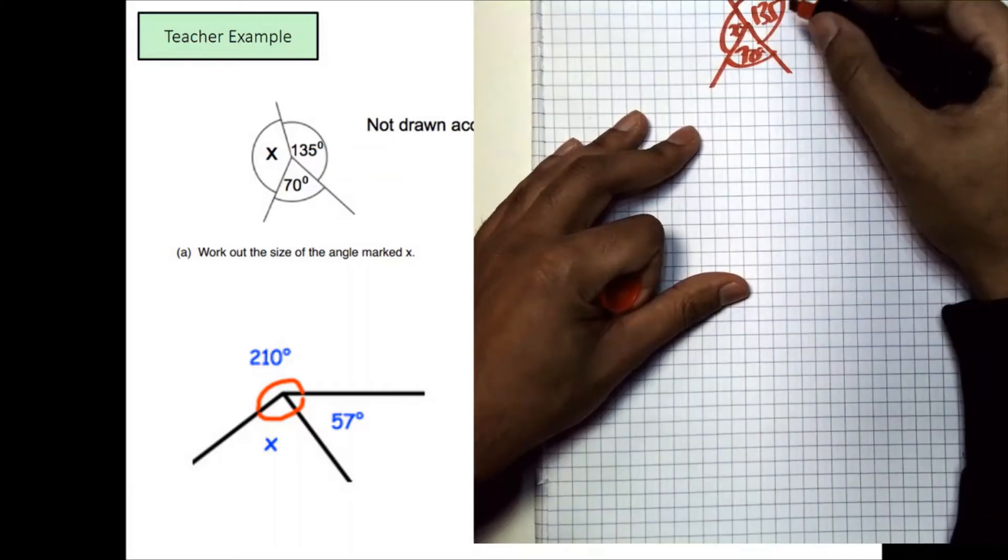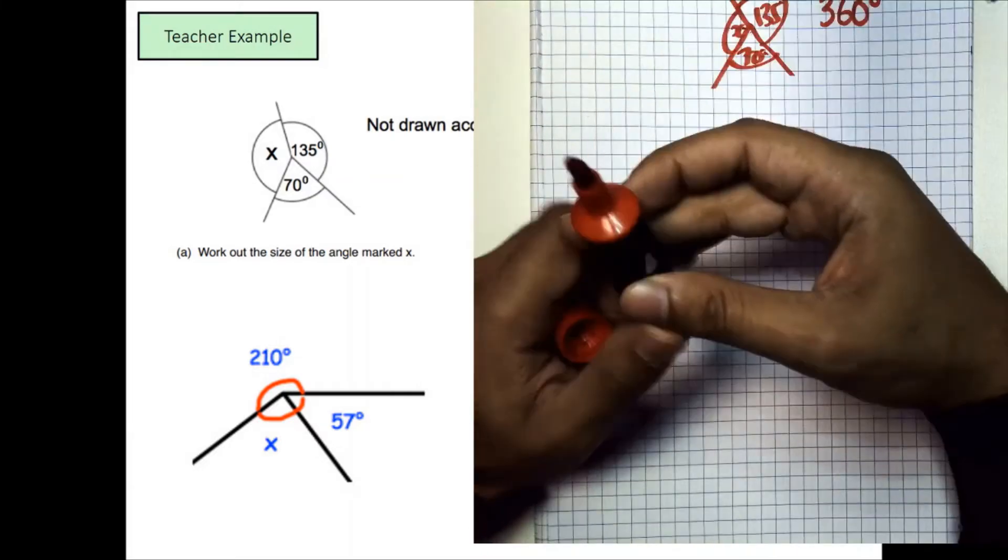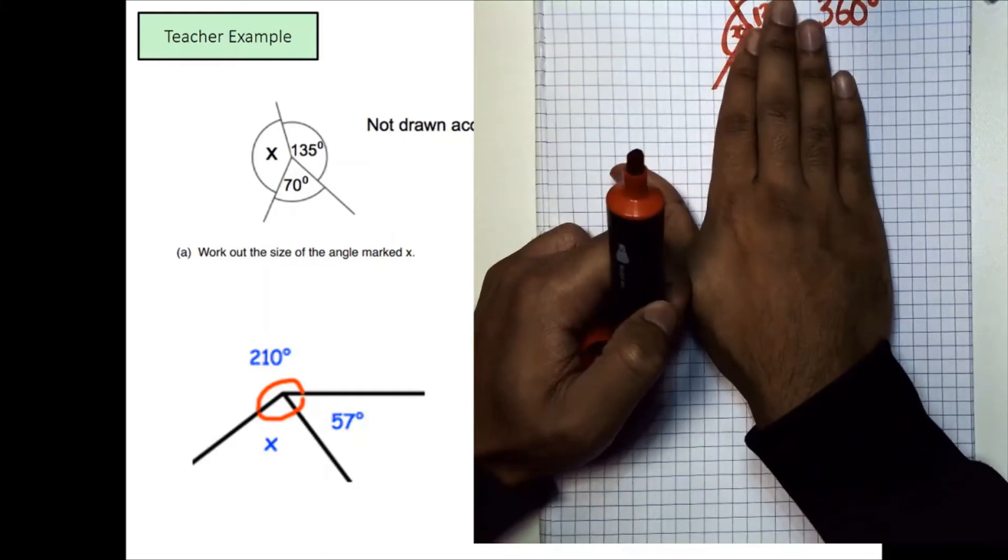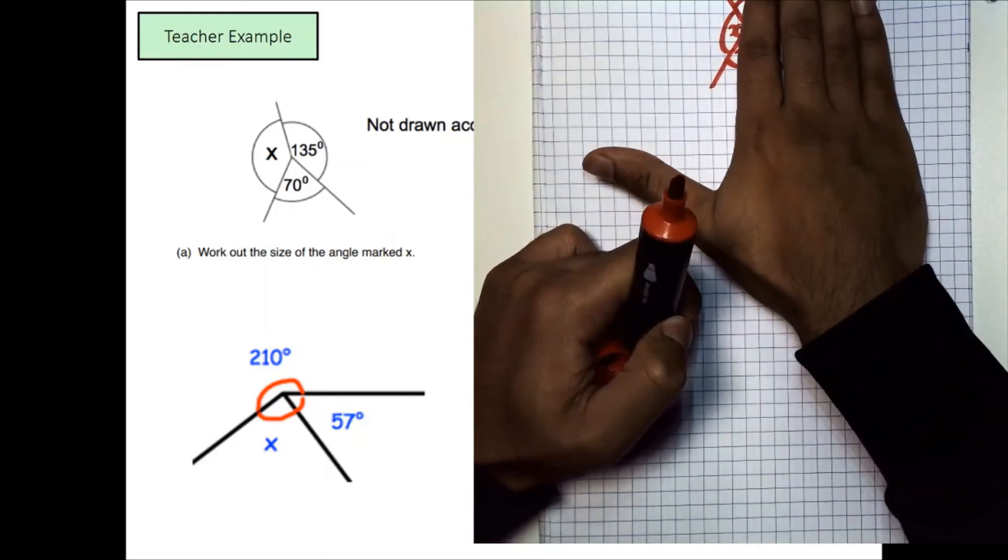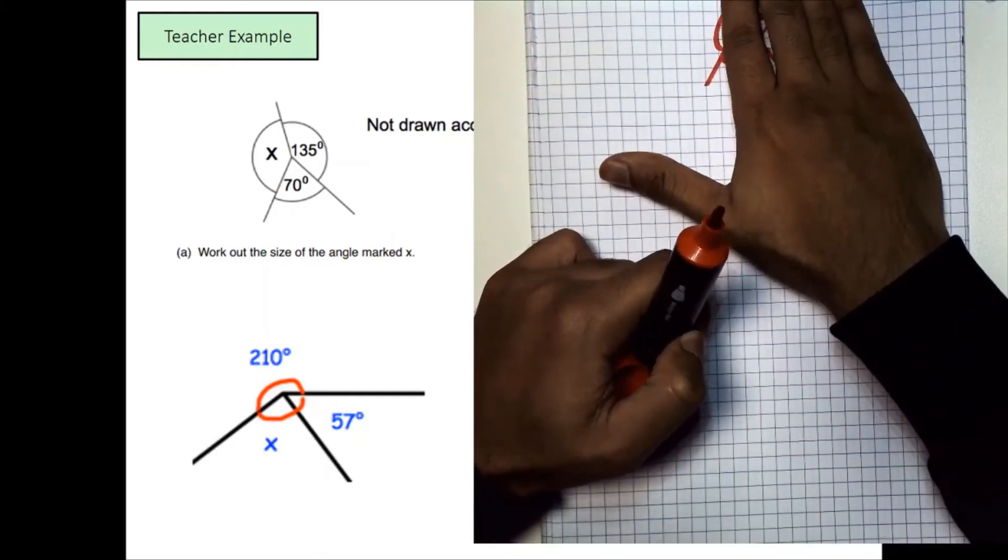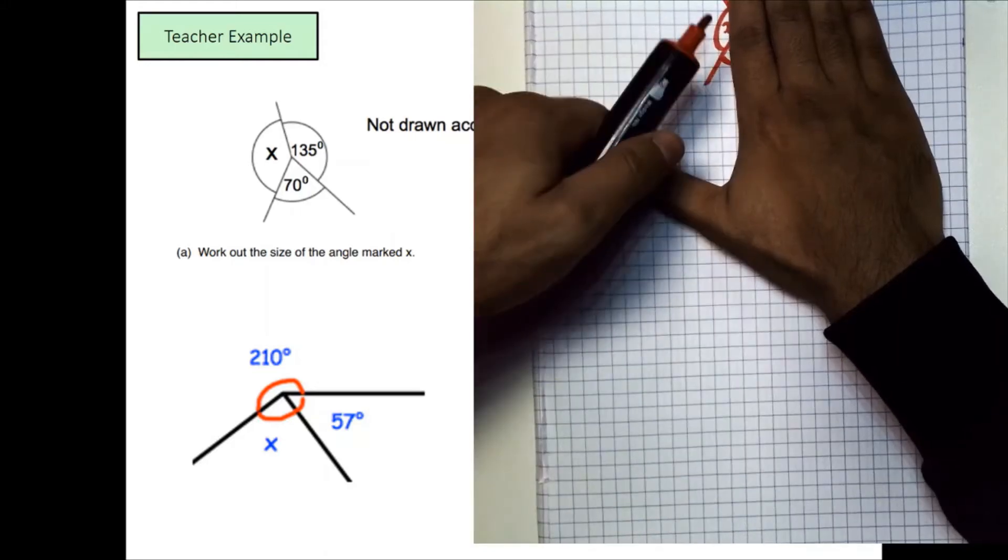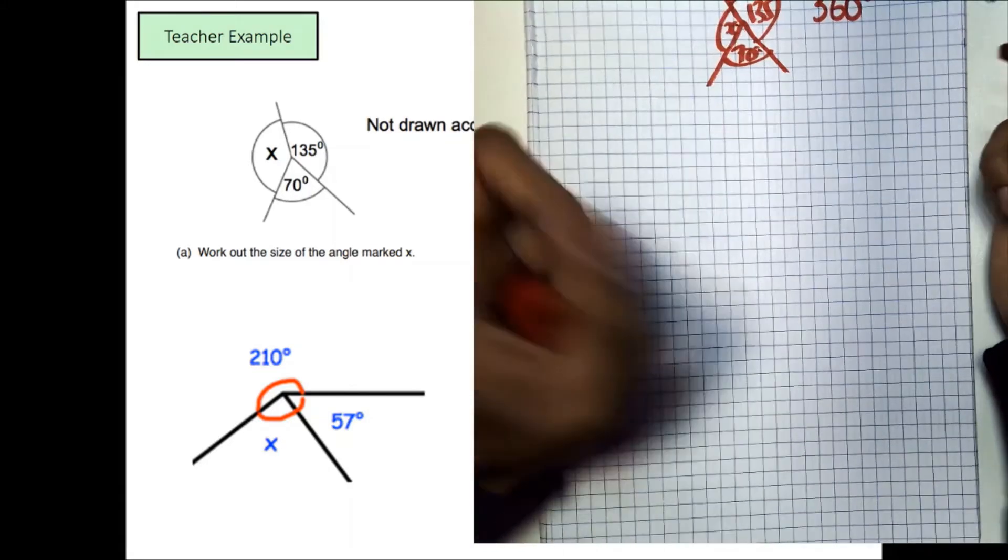Knowing that this is 360 degrees, what we can do to get x through, if we know that the whole thing is 360 degrees, we can subtract the 70 away and we can subtract the 135 away. If I take it away from 360, we get left with just x. So let's do that in mathematical terms.